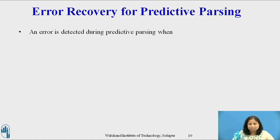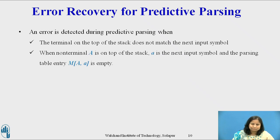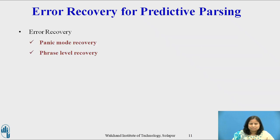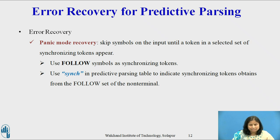The stack of a non-recursive predictive parser makes explicit the terminals and non-terminals that the parser matches with the remainder of the input. An error is detected during predictive parsing when the terminal on top of the stack does not match the next input symbol, or when non-terminal A is on top of the stack, a is the next input symbol, and the parsing table entry M[A, a] is empty. There are two error recovery techniques: panic mode recovery and phrase level recovery.